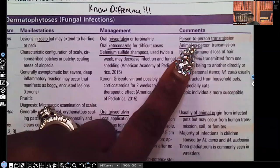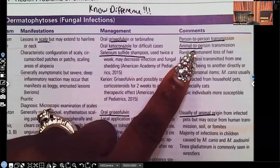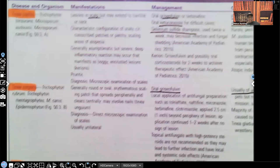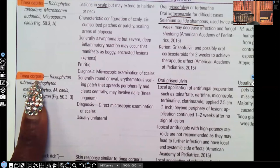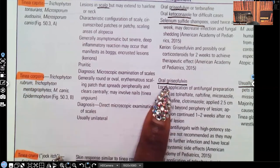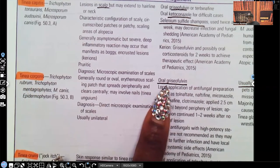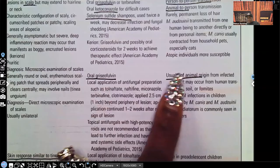Comments. Person-to-person transmission, animal-to-person transmission. Next, tinea corporis. This is on the body, fungal infection on the body. They'll get oral griseofulvin and usually of animal origin.